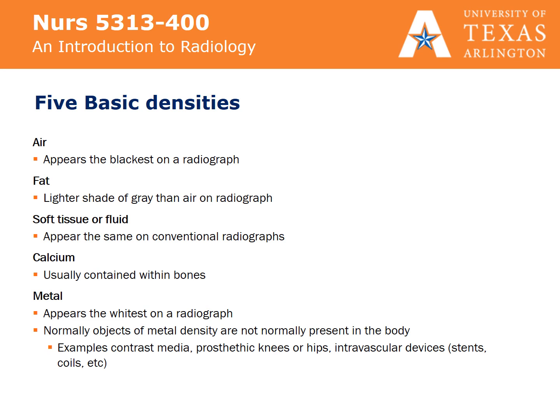The five basic densities seen on X-rays include: air, which appears blackest on a radiograph; fat, which appears as a lighter shade of gray than air; soft tissue or fluid, which appears the same on conventional radiographs; calcium, such as contained in bones, which appears white; and metal, which appears the whitest on a radiograph. Normal objects of metal density are not present in the body unless the patient has had previous surgeries or therapeutic interventional procedures.